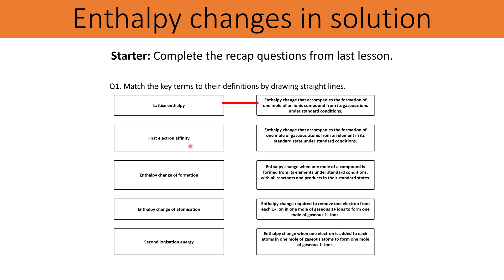Next up we've got the first electron affinity, that means to gain an electron. What we should have got for this one is the enthalpy change when one electron is added to each atom in one mole of gaseous atoms to form one mole of gaseous 1 minus ions.